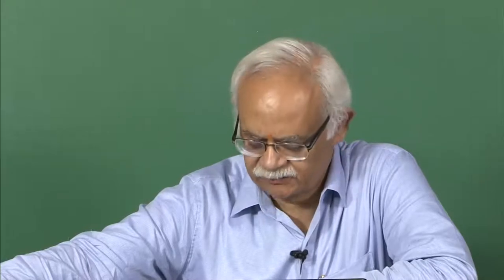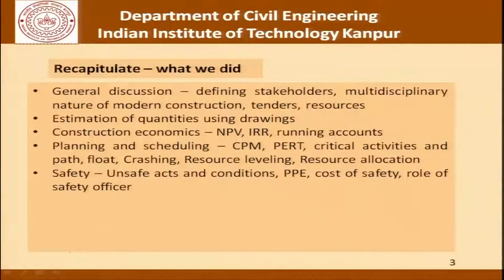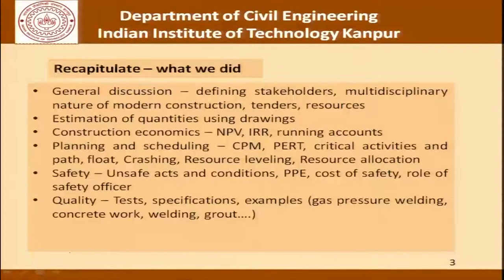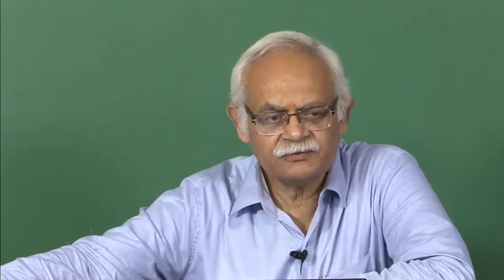We then discussed construction safety — unsafe actions and conditions, PPE, the cost of safety, the role of a safety officer, accidents, and how to prevent them. This was followed by a discussion on quality. Rather than a detailed discussion on statistics of quality control or total quality management, we took up specific examples like gas pressure welding, concrete work, welding, grouting, and tried to understand the relevant quality control issues by identifying them from the process itself.